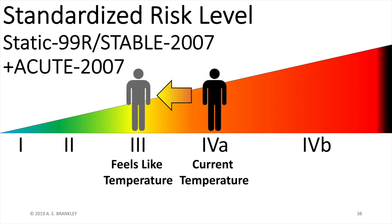In other cases, someone's risk might be much lower or higher than would be expected - similar to feel-like temperature. It is important to combine acute with static and stable and communicate that with others, for example in your case notes or reports. Acute may have unique information about the individual that is missed elsewhere.